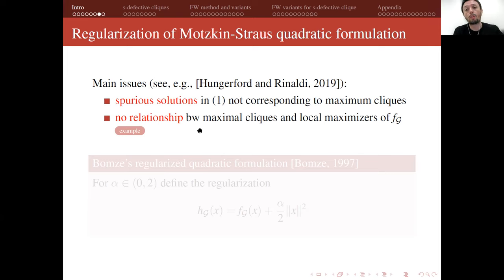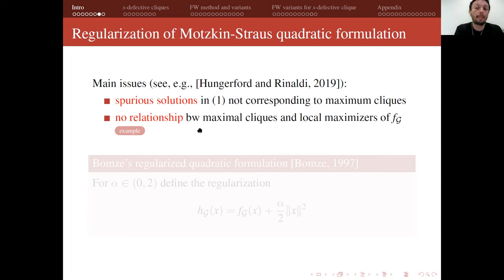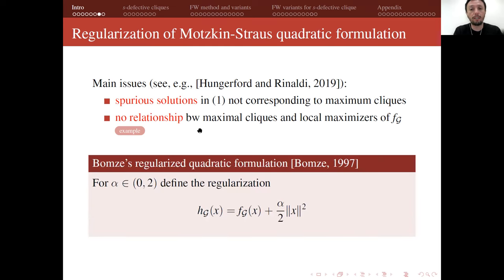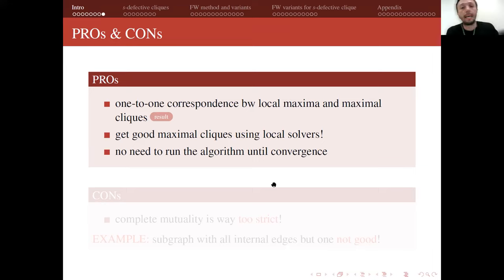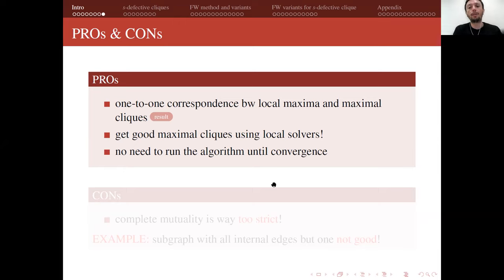Spurious solutions do not correspond to maximum cliques, and there is no clean relationship between maximum cliques and local maximizers — we may have local maximizers that are not characteristic vectors of maximal cliques, and vice versa. This is why we need to modify the formulation by adding regularization, as proposed in the 1997 paper by Bons. With this regularized formulation, we get a one-to-one correspondence between local maxima and maximal cliques, allowing good maximal cliques to be found using local solvers.